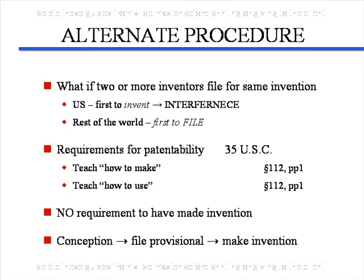Here is an alternate procedure which can be used in filing your patent application in certain circumstances. As previously described, the usual procedure is conception of the invention, then the doing in the laboratory — reduction to practice — and finally filing a provisional patent application. This alternative becomes very important if two or more inventors file for the same invention at approximately the same time. In the United States, the one that invented first gets the patent, determined by a legal proceeding called an interference. For the rest of the world, the one that filed first gets the patent — you simply line up the patent applications, look at the filing dates, and the first to file wins.